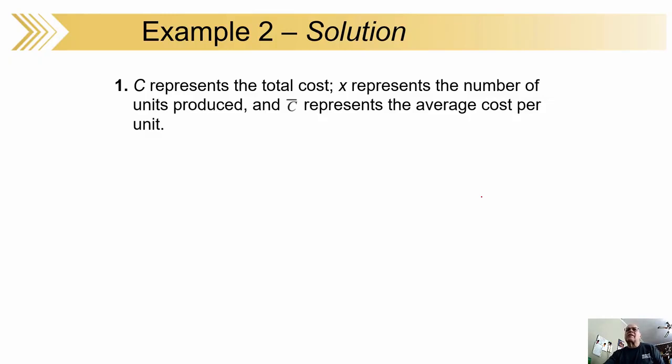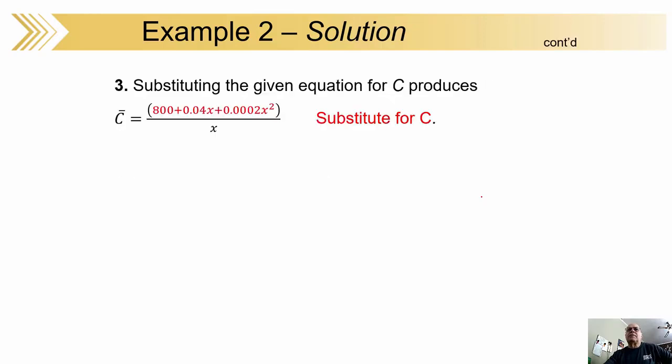C is the total cost. We need the average cost per unit. There's our primary equation. And substituting what we have earlier, this is the total cost function that our friends in the statistics department or somewhere gave us. Divide through by the x. That makes the whole thing a lot simpler. We don't have the quotient rule staring us in the face.